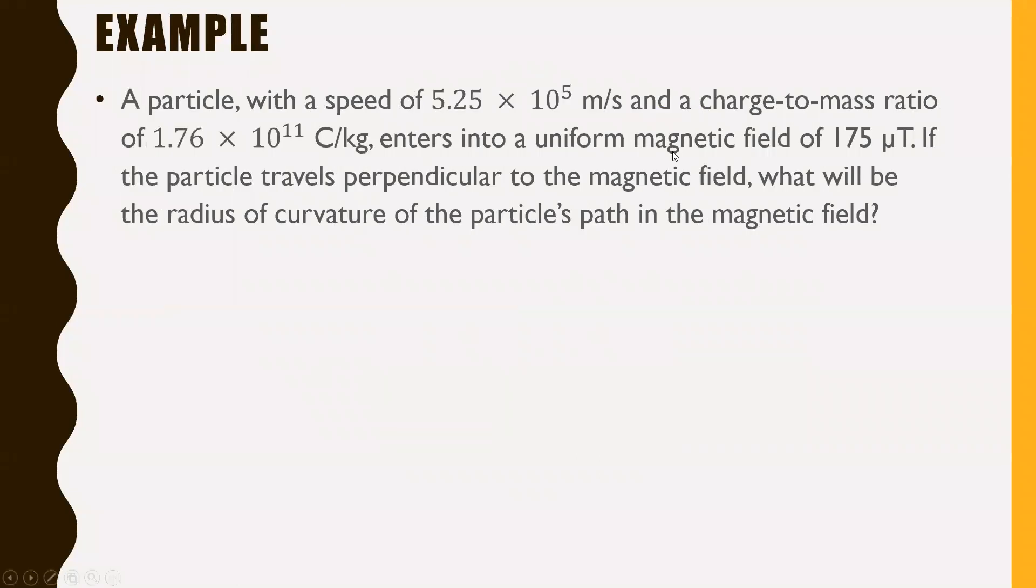First one here: a particle with a speed of 5.25 × 10⁵ m/s and a charge-to-mass ratio of 1.76 × 10¹¹ C/kg enters into a uniform magnetic field of 175 micro teslas. If the particle travels perpendicular to the magnetic field, what will be the radius of curvature of the particle's path in the magnetic field? Pause the video here, give this one a shot.